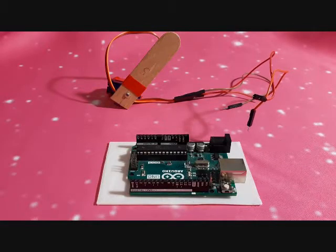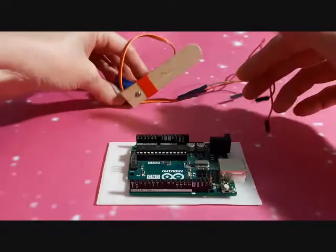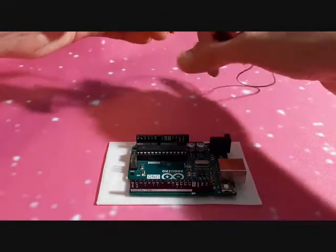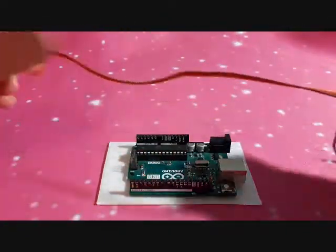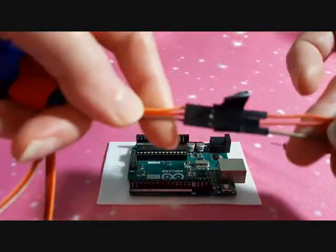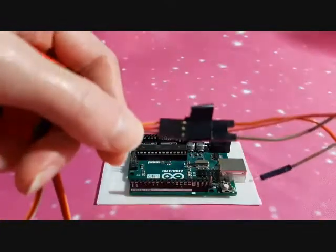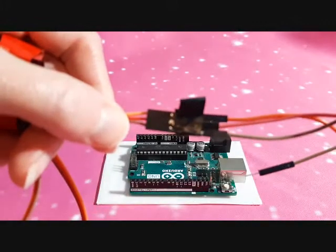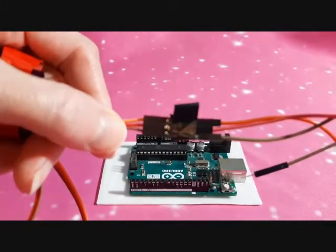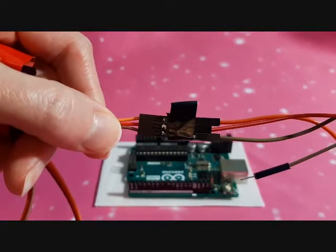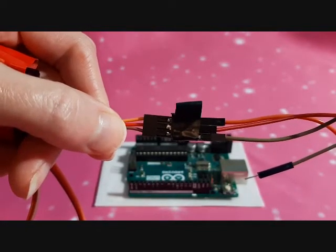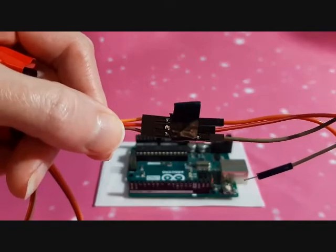This is a tutorial for Arduino and servo motors. We're going to use an SG90 servo motor. If you look here you can see the wires are brown, red, and orange. Brown is the ground, red is the positive, and orange is the signal wire.